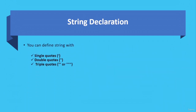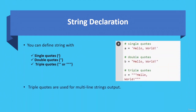You can define a string with single quotes, double quotes, or triple quotes, where triple quotes are used for multi-line string output. For example: 'a = hello world' with single quotes, 'b = hello world' with double quotes, and with triple quotes for multi-line output — you can see that after 'hello', the word is on the next line. So you can define a string with triple quotes for multi-line string output.